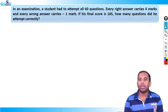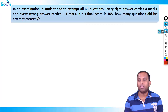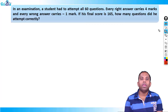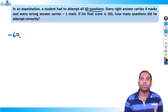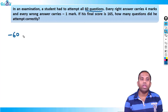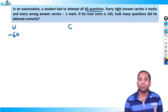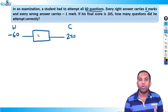Next question: In an examination, a student had to attempt all 60 questions. Every right answer carries 4 marks and every wrong answer carries −1 mark. If his final score is 165, how many questions did he attempt correctly? Apply the same principle: if all 60 questions were wrong, he scores −60. If all 60 were correct, he scores 60 × 4 = 240. The actual resultant score is 165.